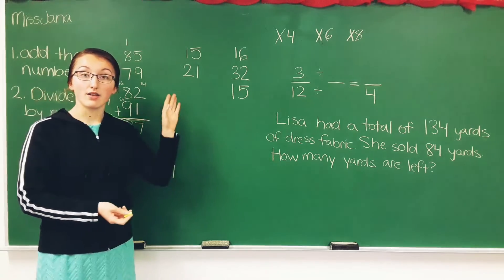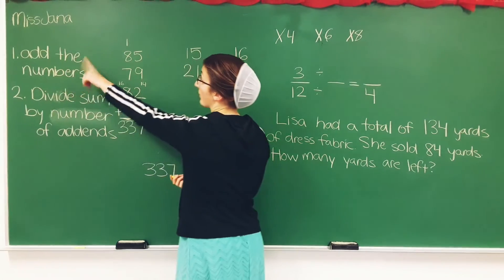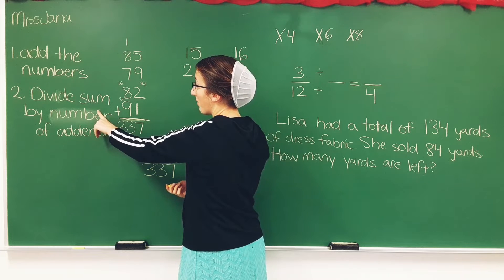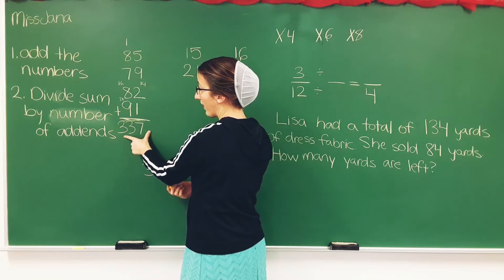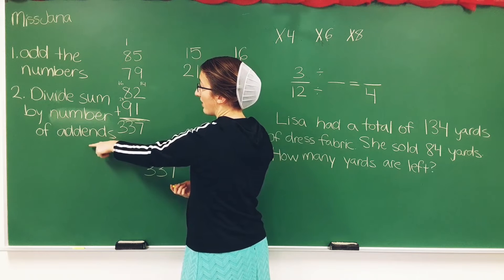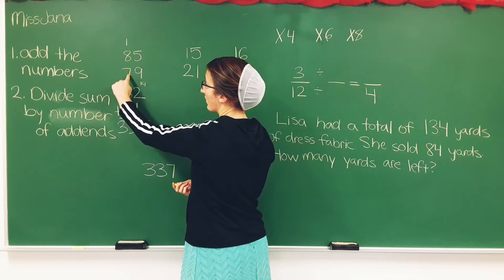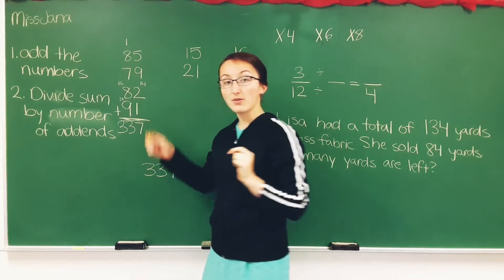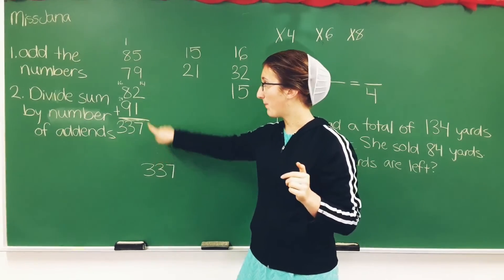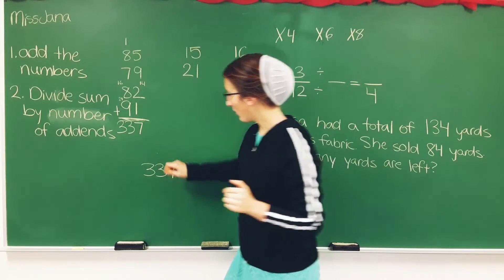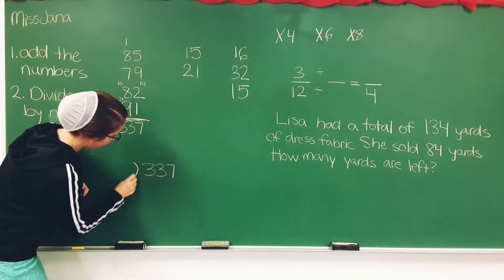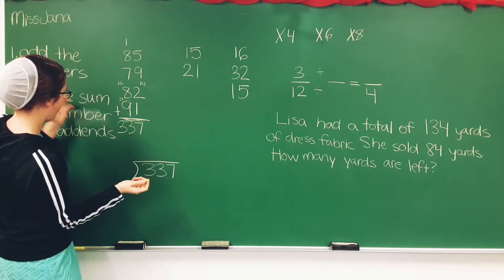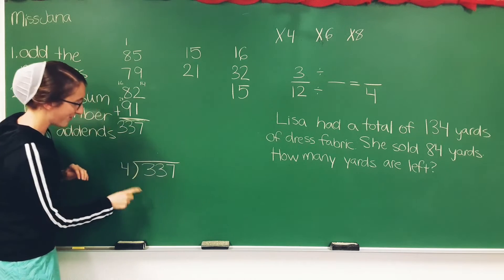And we're going to divide. So we add the numbers, that's the first step. And then we divide the sum. So this is the sum. Divide the sum by the number of addends: 1, 2, 3, 4. These are addends. Each of them is an addend because we're adding them together to find the sum. So we have 4. So 337 divided by 4.